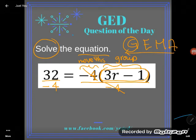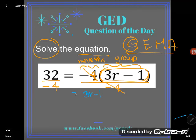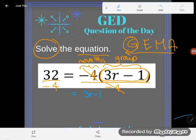So I'm just going to write, whoops, sorry, 3r minus 1 on this side. Now, on that side, 32 divided by negative 4 is negative 8.